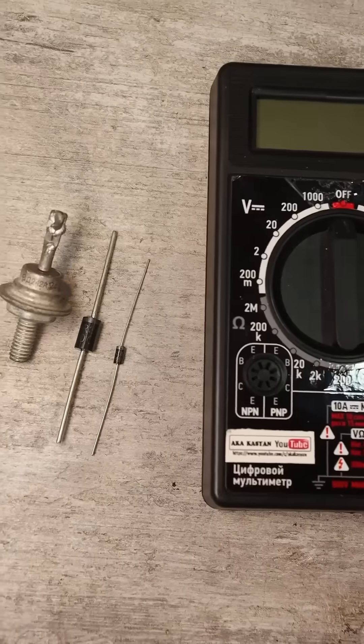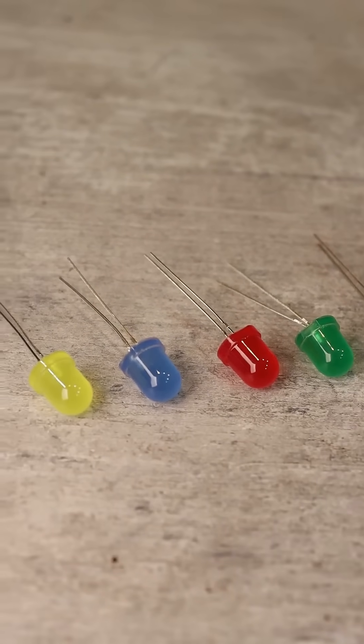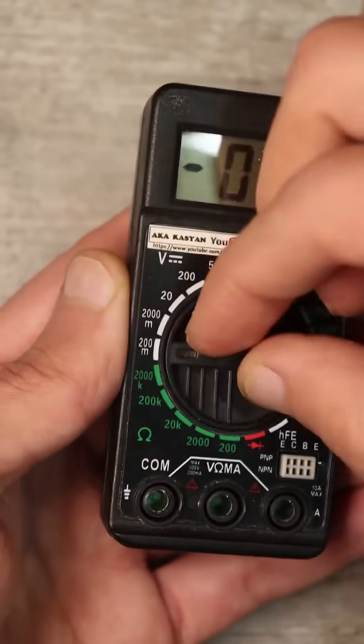Previously, we have already looked at how to test diodes with a multimeter. A light-emitting diode is a type of diode, so to test it, we switch the multimeter to the mode for measuring voltage drop across diodes.